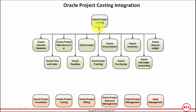Ultimately, the project costing module is a central repository which collates all the costs from all these sources. The invoices processed for suppliers which are related to the project are integrated with Oracle Project Costing and they are reflected as an expenditure in project costing.